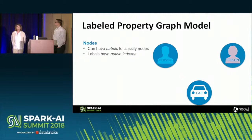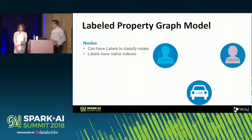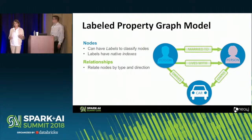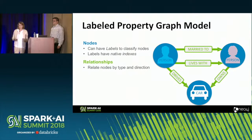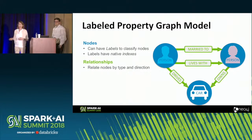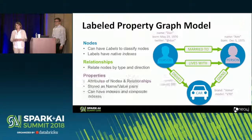Just a quick overview for those of you that aren't super familiar with property graphs and label property graphs. Very simply, you've got nodes in a graph — you've got people, cars, what you might normally think of as a noun. These can have labels to help classify them and understand what they are. There are relationships in graphs — basically how things relate together, just what it sounds like. Maybe this person lives with somebody else, maybe they're married, they drive or own a car.